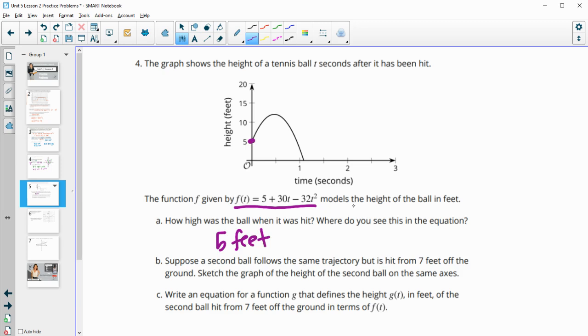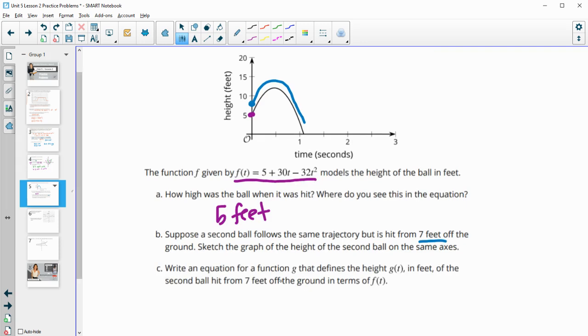So suppose a second ball follows the same trajectory but is hit from 7 feet. So it's going to do this exact same thing, but instead of hitting from 5 feet, it's going to hit from 7 feet. So it's just going to be 2 feet higher starting point. So every point is just going to be 2 feet higher. So just draw a sketch of that and then write an equation for the function g of t that defines this height. So g of t would equal the original function, but just 2 feet higher. So f of t plus 2. Or if you wanted to use this, so then you're just going to be 2 higher. So you're just going to add 2. So then this is just going to be a 7. So g of t would be 7 plus 30t minus 32t squared.